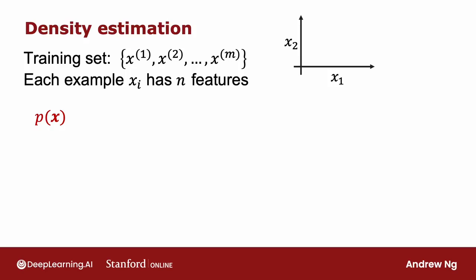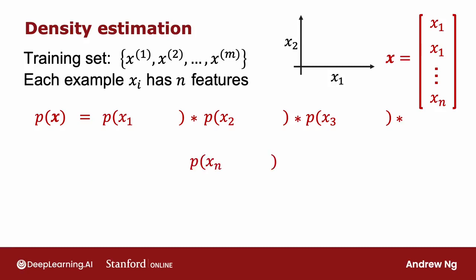And our model for p(x) is going to be as follows. x is a feature vector with values x₁, x₂, and so on down to xₙ. And I'm going to model p(x) as the probability of x₁ times the probability of x₂ times the probability of x₃ times the probability of xₙ for the n features in the feature vectors.